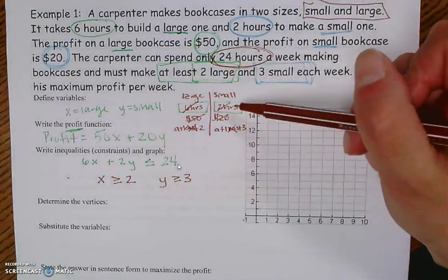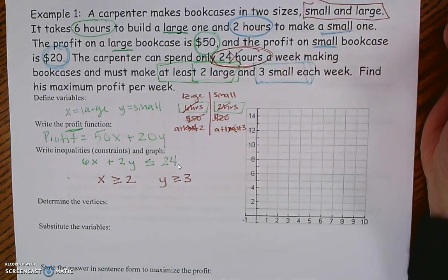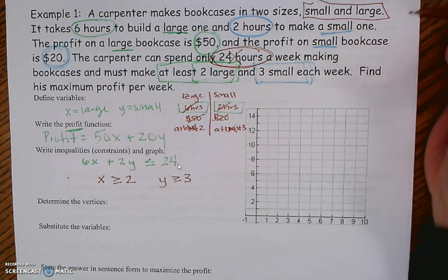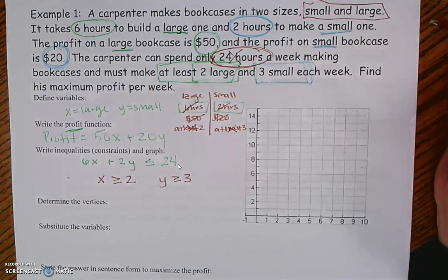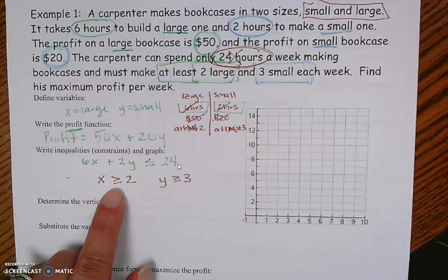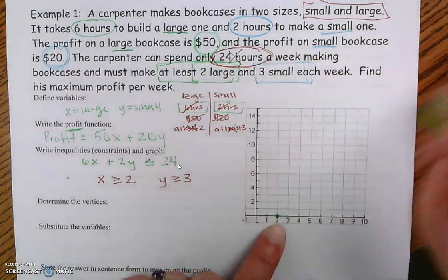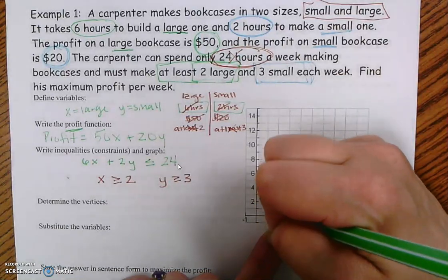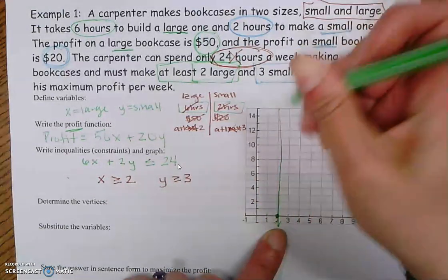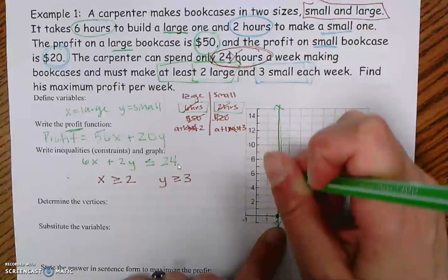If I've used every number from my list and every number from my problem, I'm ready to get started with my graph. So the next thing I'm going to do is graph. I'll graph x is greater than or equal to 2 — I go to my x value, where x equals 2, and draw a vertical line all the way up and down. Try to be as accurate as possible when making this line.